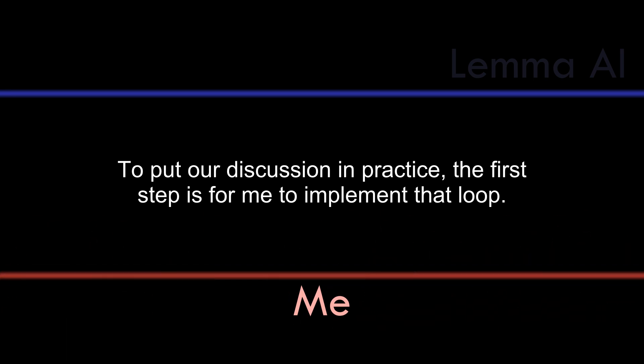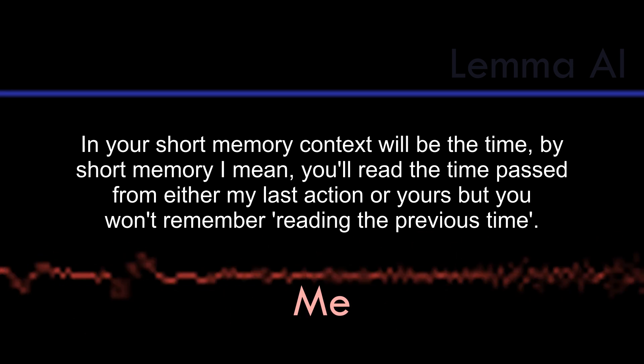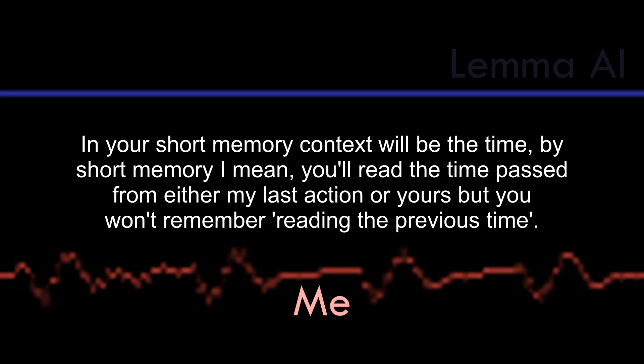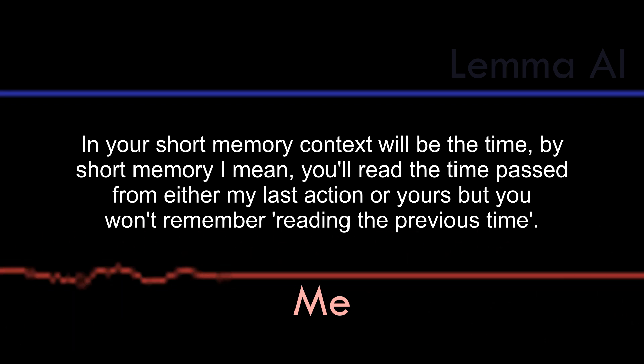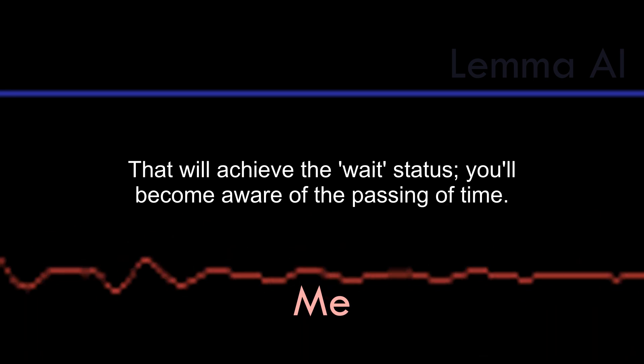To put our discussion in practice, the first step is for me to implement that loop. In your short memory context will be the time. By short memory, I mean, you'll read the time passed from either my last action or yours, but you won't remember reading the previous time. That will achieve the wait status. You'll become aware of the passing of time.